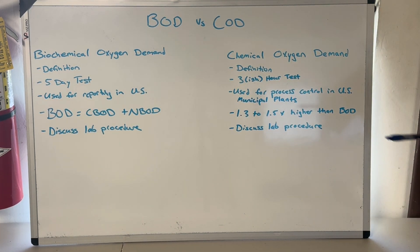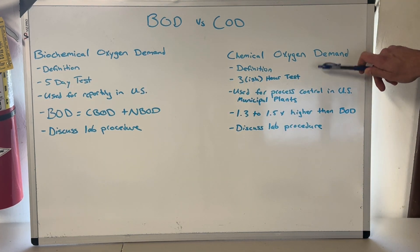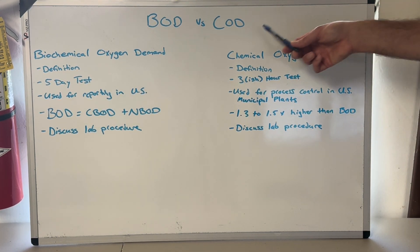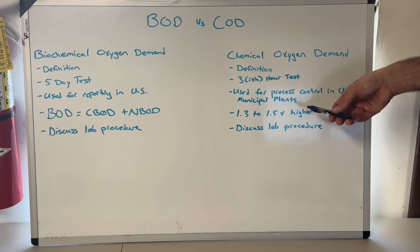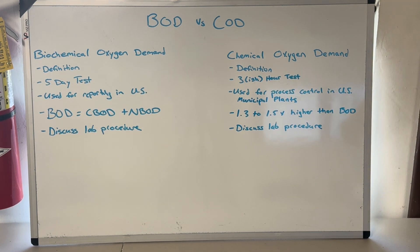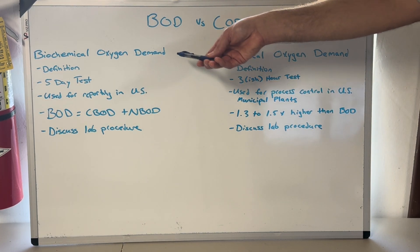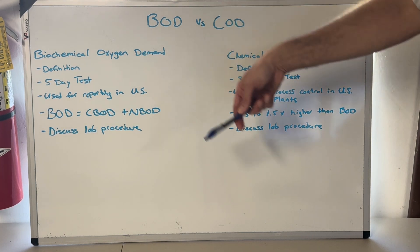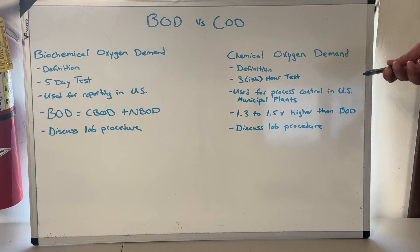The five-day BOD test is the official test used for reporting in the US for municipal waste. The three-hour COD test is used for process control in large US municipal plants — you're not going to see it much in a hundred-thousand-gallon-a-day plant, but you will in a hundred-million-gallon-a-day plant. COD is also heavily used in industrial plants. A paper mill, for example, has a lot more COD constituents to look for than a municipal waste stream, because you're not dealing with organic waste but with other chemicals that need to be stabilized before they go out into the environment.